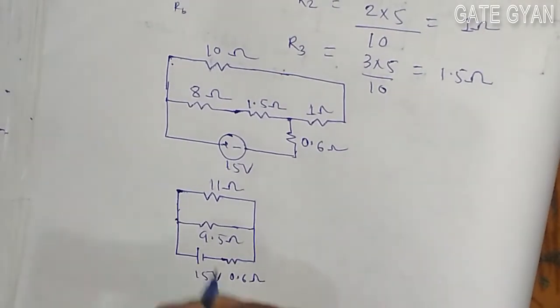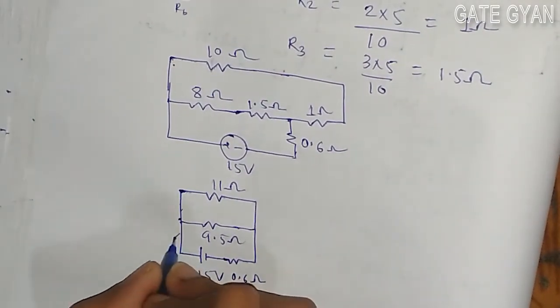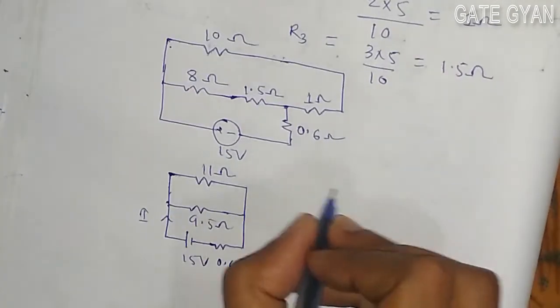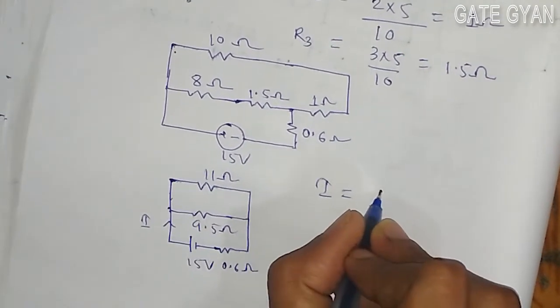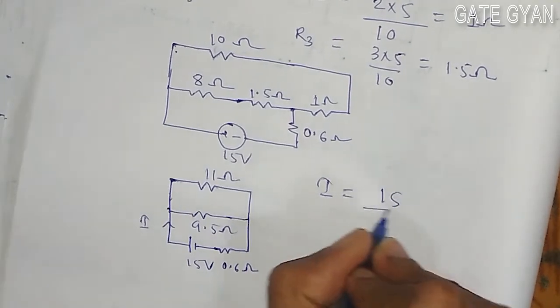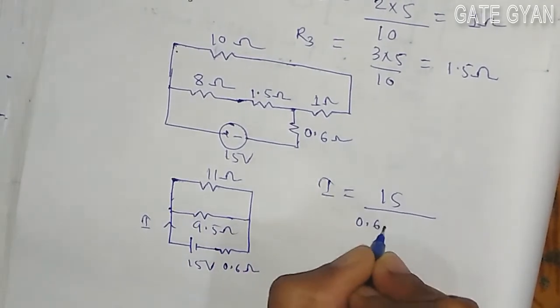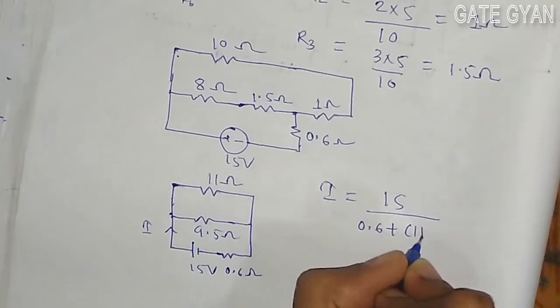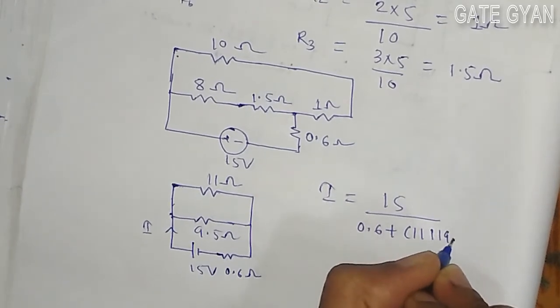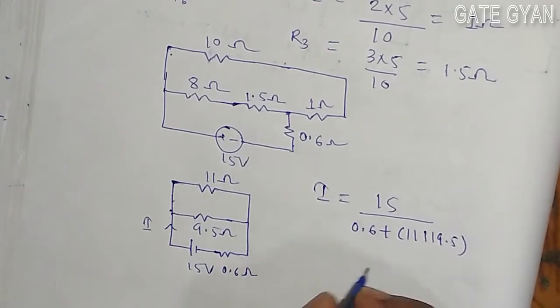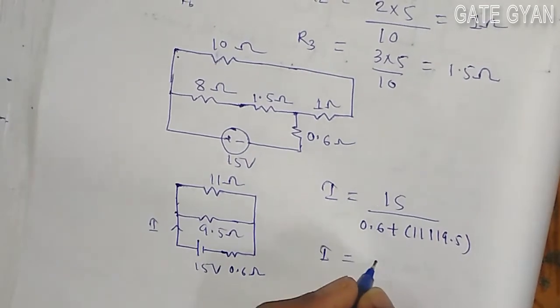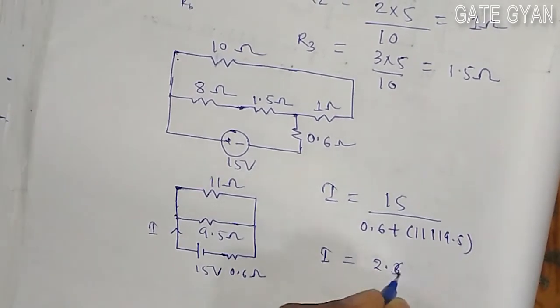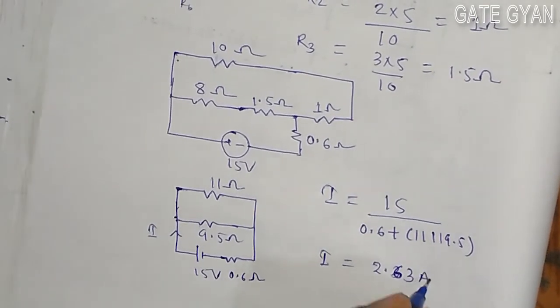So first of all I will find the current I, so my current I will become 15 divided by 0.6 plus 11 parallel 9.5. So 11 parallel 9.5, so I is going to be 2.63 ampere.